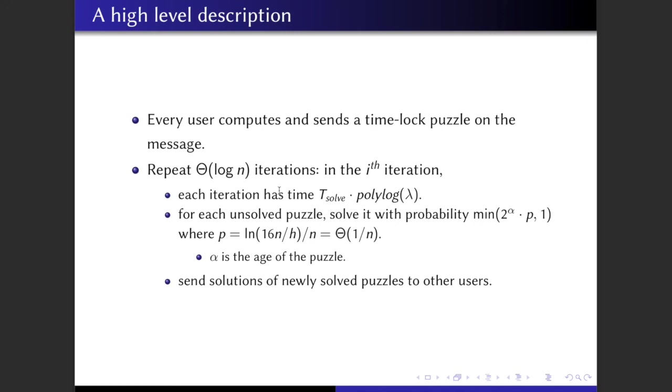We do it by first defining some probability p, which is, ignoring all the details, approximately 1 divided by n. And the probability of solving a puzzle is 2 to the alpha times p. Here, alpha is basically the age of the puzzle. This means how many rounds has this puzzle remained unsolved. Finally, after we solve the puzzles, we're going to send solutions to all other users.